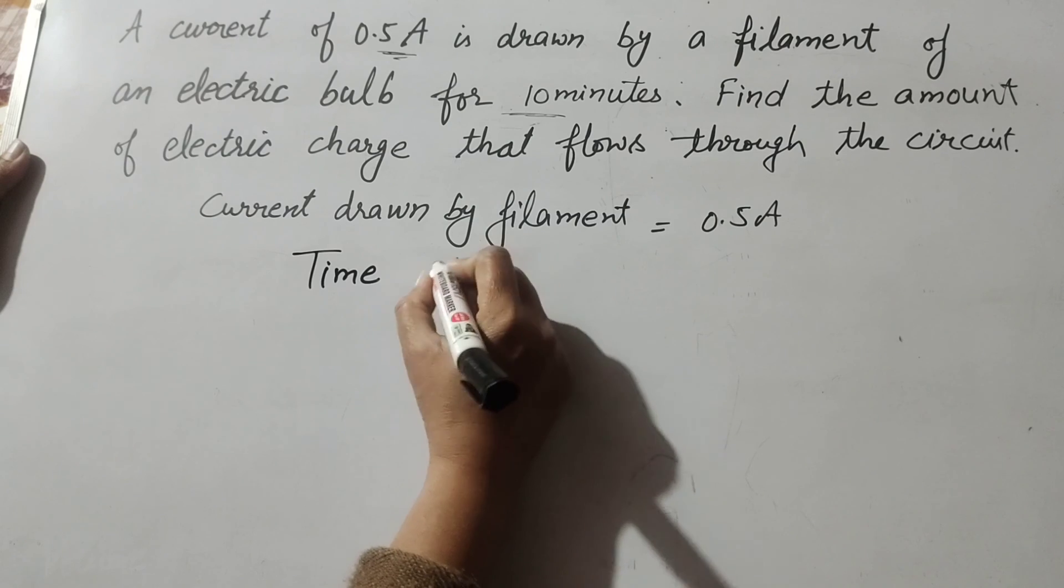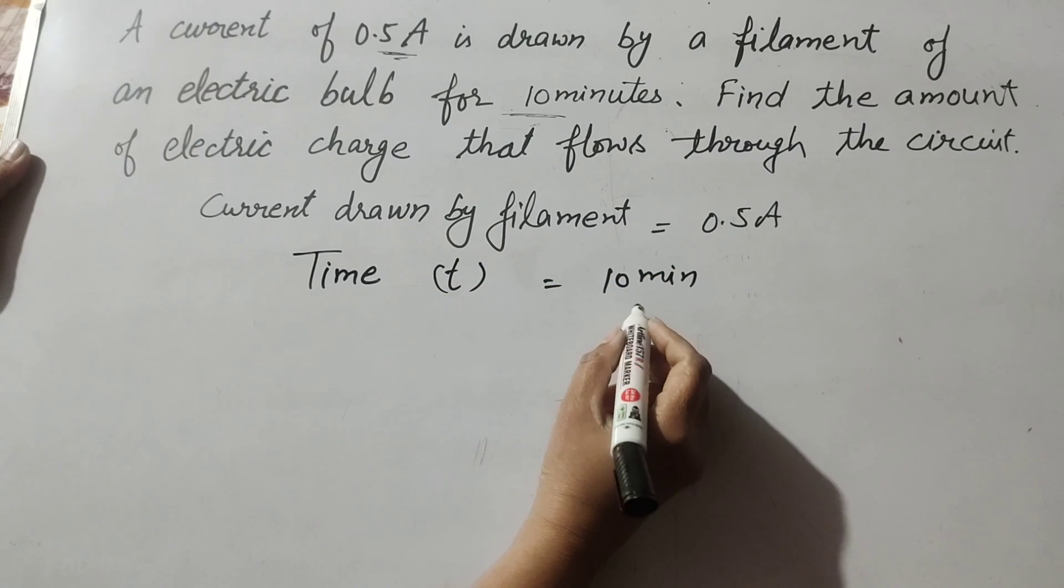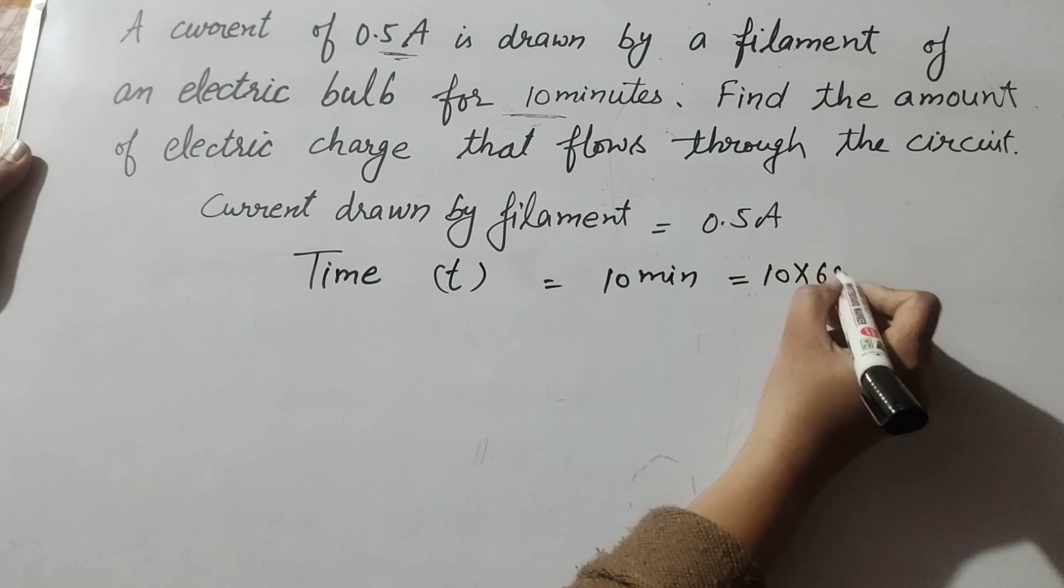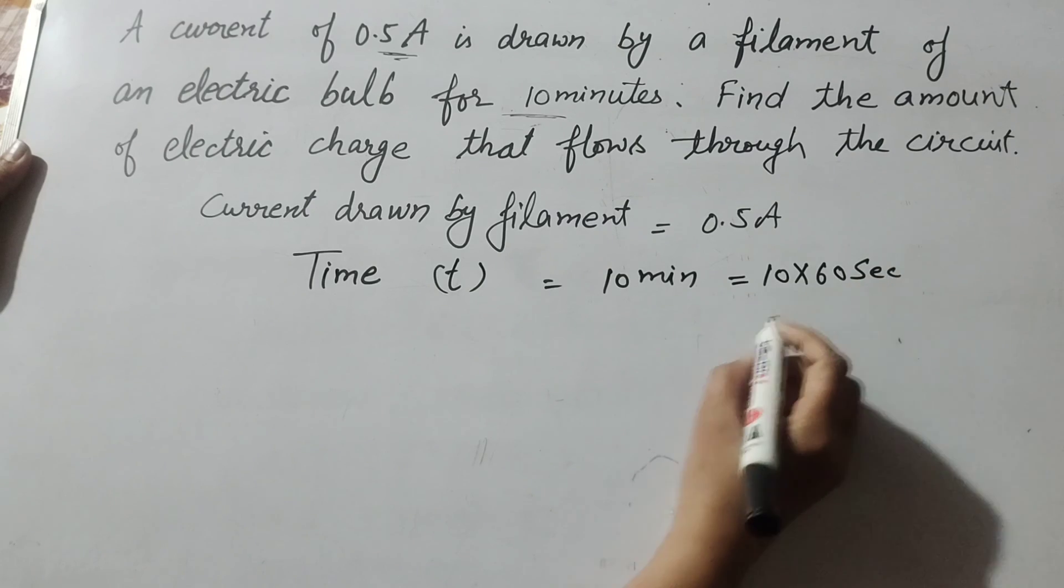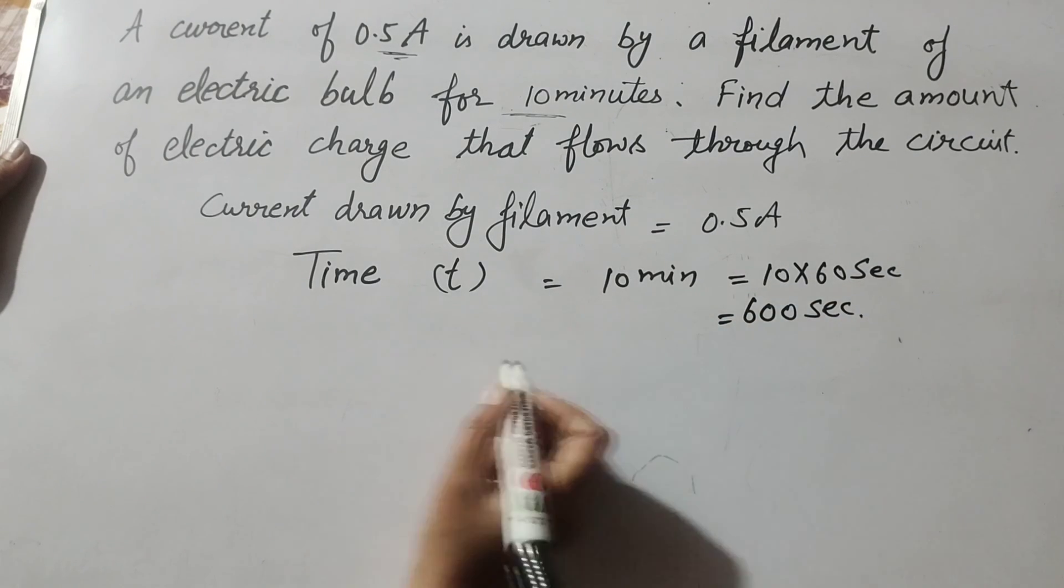Time T is equal to 10 minutes. We change this minute into seconds, then we multiply it by 60 seconds. So it is equal to 600 seconds.